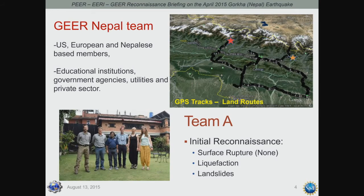The GEAR Nepal team consisted of members from the U.S., Europe, and Nepal, encompassing a number of organizations including educational institutions, government agencies, utilities, and the private sector. A significant part of the funding came from NSF, in addition to numerous contributions from a large number of organizations.